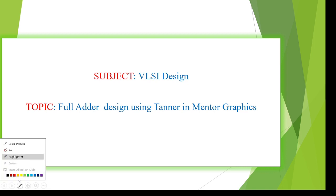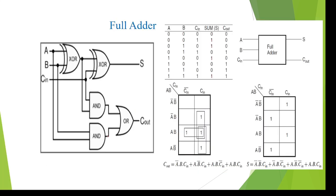We know that the full adder has inputs and one output. A, B, C are the inputs and sum and carry are the outputs. If we take 0, 0, 0 inputs, then the sum is 0 and carry is 0. If we take 0, 0, 1 as the inputs, then sum is 1 — 0 plus 0 plus 1 — and carry is 0, like this for all combinations.